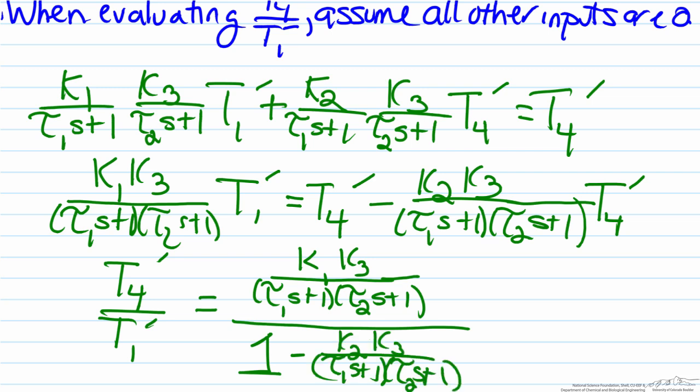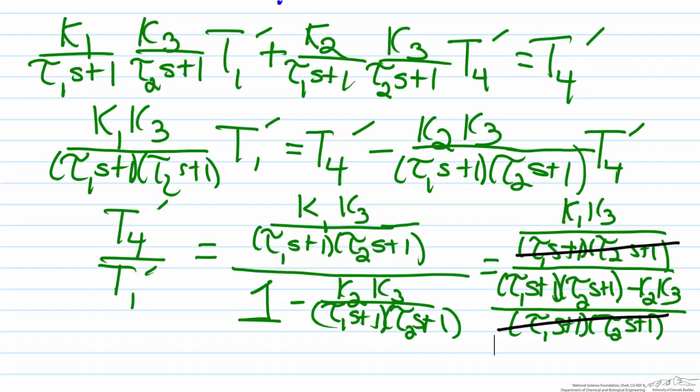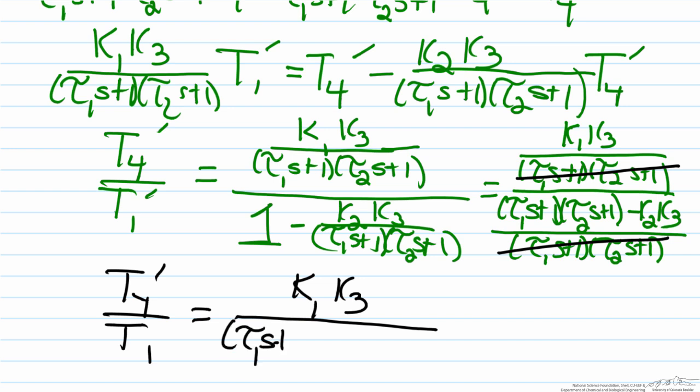We could simplify this a little bit by getting a least common denominator for the denominator. The denominators in the numerator and denominator are going to cancel. That leaves us with a transfer function in general form, T4 prime over T1 prime equals k1 k3 over tau1s plus 1 times tau2s plus 1 minus k2 k3.